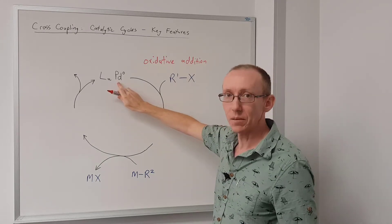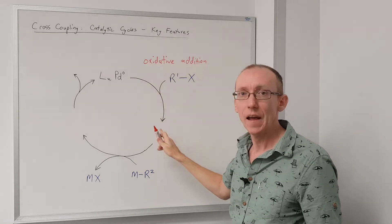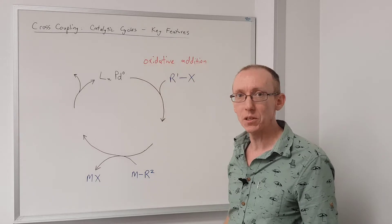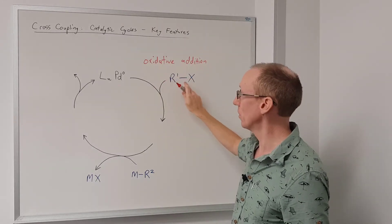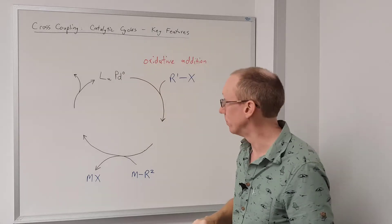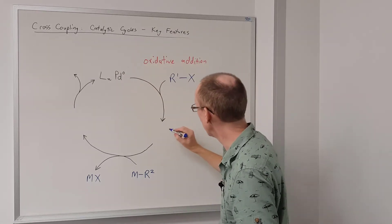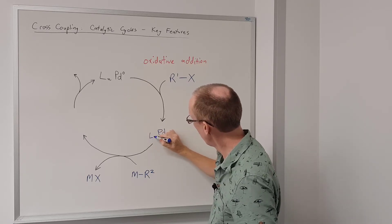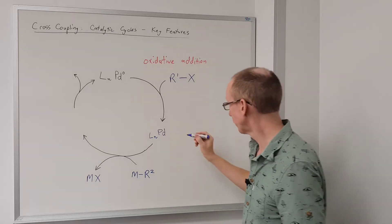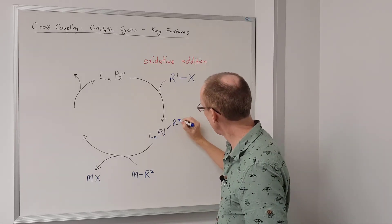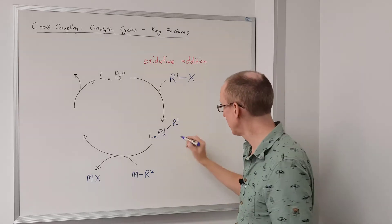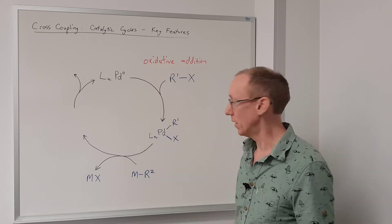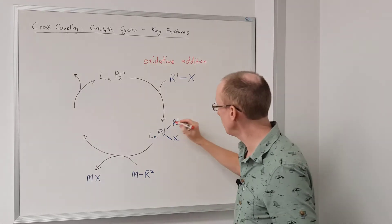What happens is the palladium in this first step gets oxidized — that's why it's known as an oxidative addition — and this group adds to that palladium species by breaking that bond, and each half of this molecule is now bonded to palladium. Drawing this out in blue: we have a palladium center, and the R group has been inserted as one new ligand for that palladium, and the X group is the other. At this point we've got a palladium(II) species.